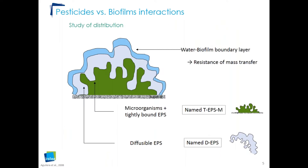To study pesticide distribution in the biofilm, the biofilm was split into two fractions. The first fraction, shown in green, is composed of the microorganisms and the tightly-bound EPS (TEPSM fraction). The second fraction, shown in gray, is composed of diffusible EPS (DEPS fraction). There also exists a boundary layer in interaction between the water column and the biofilm, which has a resistance to mass transfer — and therefore resistance to pesticide transfer into the biofilm.